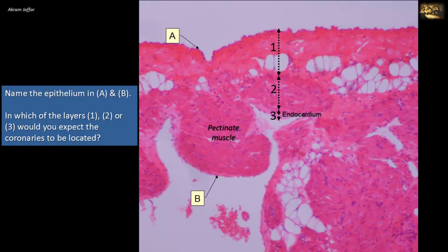The innermost layer is the endocardium, lined by simple squamous epithelium — the endothelium — like in any other blood vessel, represented in B. The middle layer, which has muscle fibers and blood vessels, is represented in the heart by the myocardium, shown in layer 2 where the pectinate muscle appears. The myocardium contains cardiac muscle fibers, not smooth muscle fibers like those in the tunica media of blood vessels. It is much thicker in the ventricles, especially the left ventricle, and thinnest in the atria. The outermost layer, corresponding to the tunica adventitia, is called the epicardium.